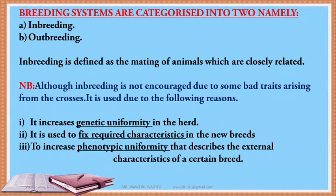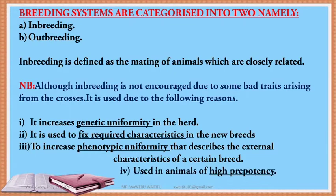Number three, it increases the phenotypic uniformity that describes the external characteristics of a certain breed — for example, the white patch on the forehead of a Friesian. And number four, it is used in animals of high prepotency, ensuring that a trait is passed on easily to many offspring.